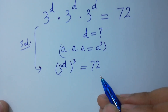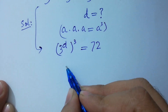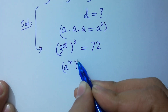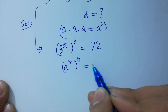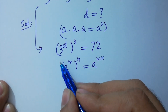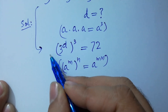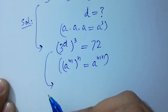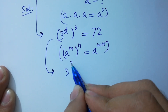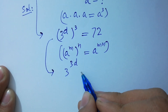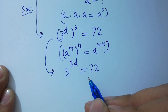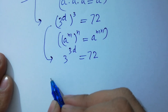Since a to the power m, to the whole power n, equals a to the power m·n, we have 3 to the power 3d equal to 72. Take log on both sides.